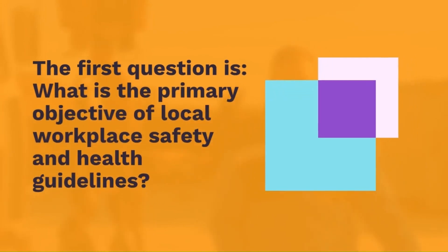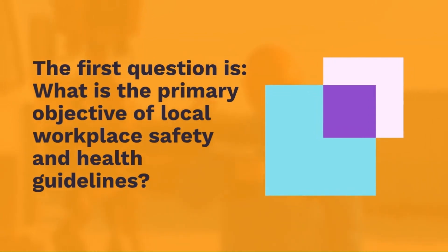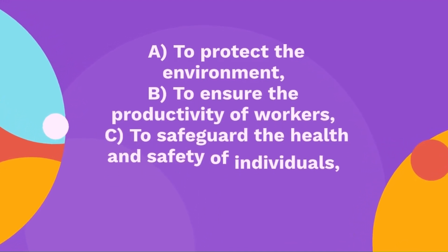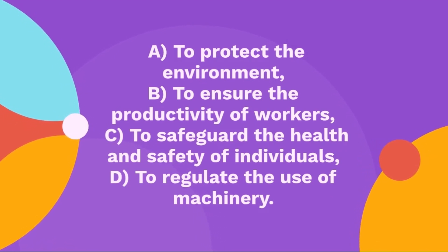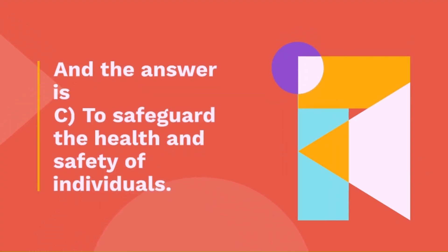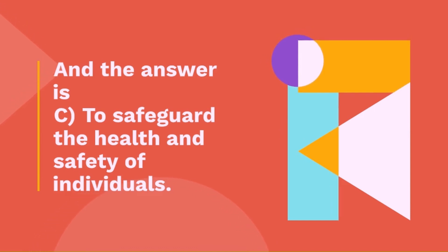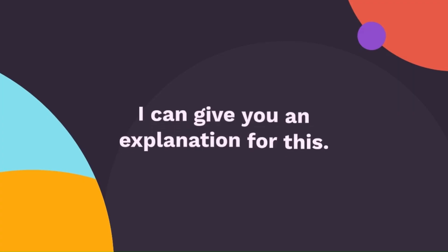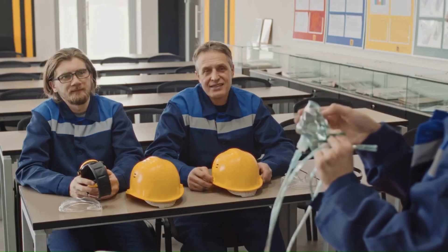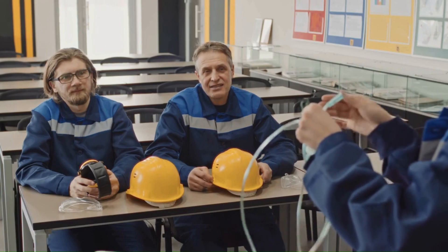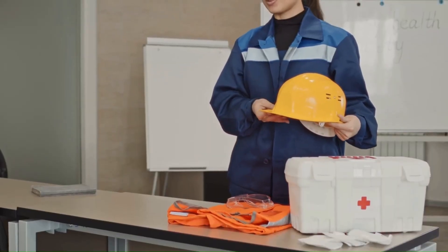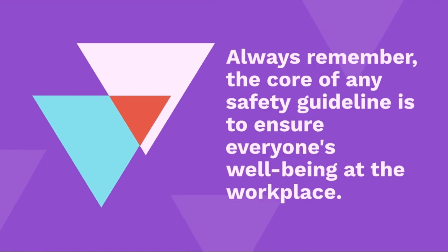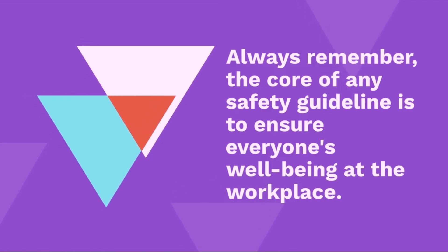Question 1: What is the primary objective of local workplace safety and health guidelines? The options are: to protect the environment, to ensure the productivity of workers, to safeguard the health and safety of individuals, or to regulate the use of machineries. The answer is to safeguard the health and safety of individuals. The main goal of WSH guidelines is to keep everyone safe at work. Always remember the core of any safety guideline is to ensure everyone's well-being at the workplace.